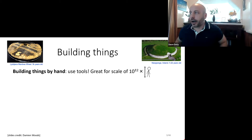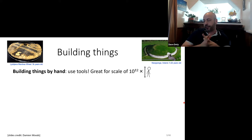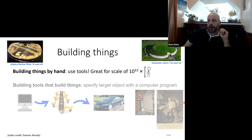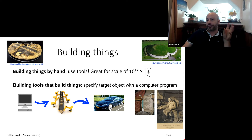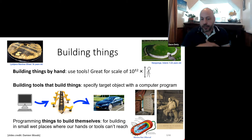We know how to build things — humans have been doing this for thousands of years. Here are some very old, very impressive things that were built. Building things by hand or using tools works great for things within a few orders of magnitude of the size of us. One technique that's gotten popular since the Industrial Revolution is building tools that themselves build things — you specify with a program the object you want to build, then give it to a machine. An early inspiring example was the Jacquard loom from the 1700s, which introduced the idea of punch cards.